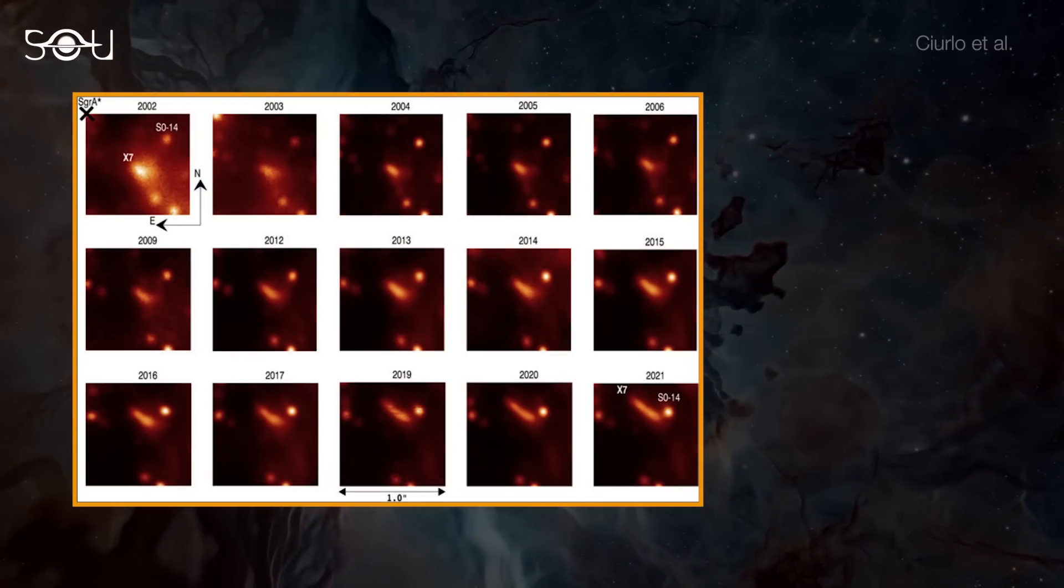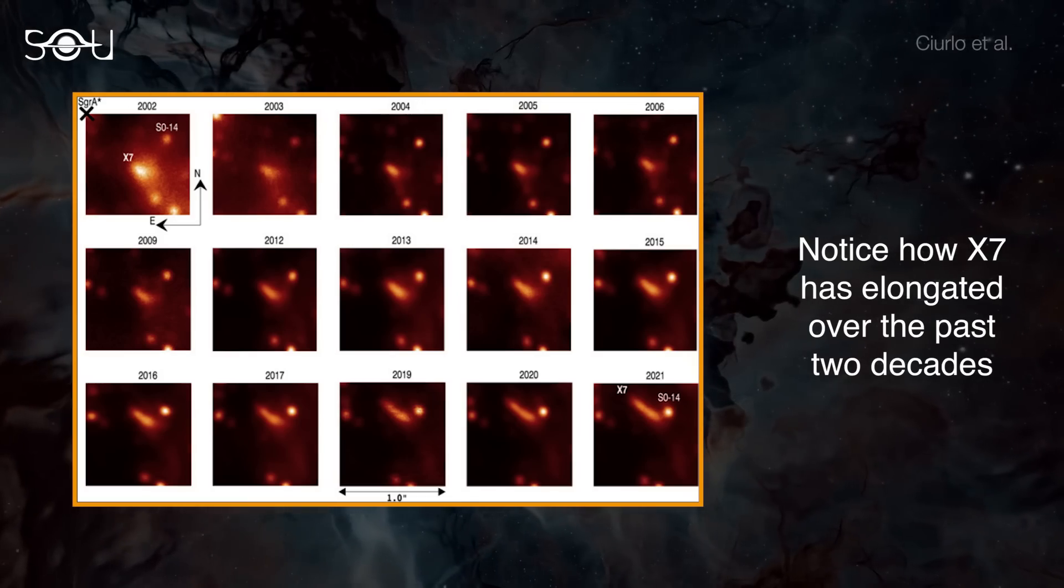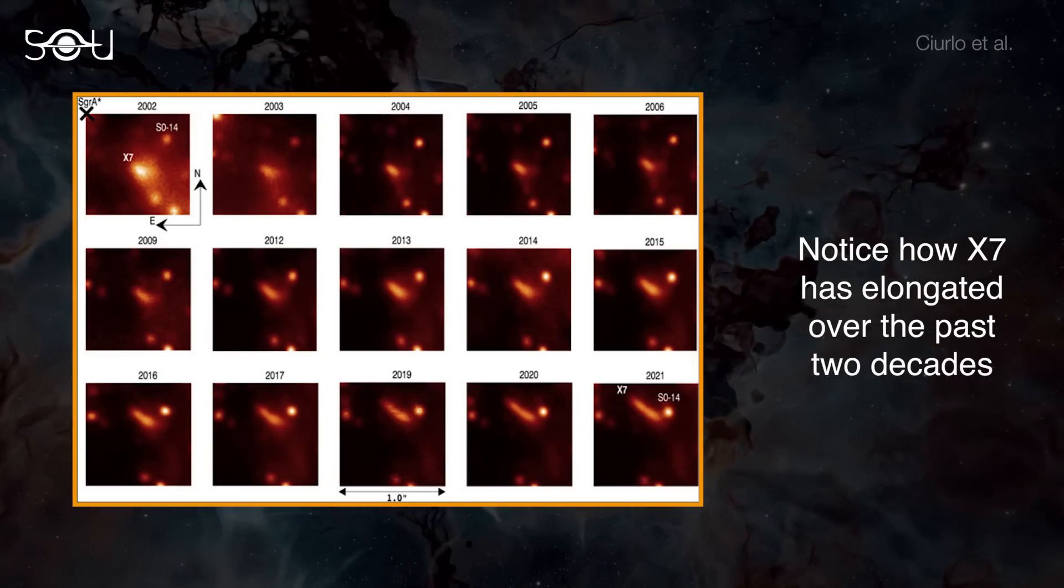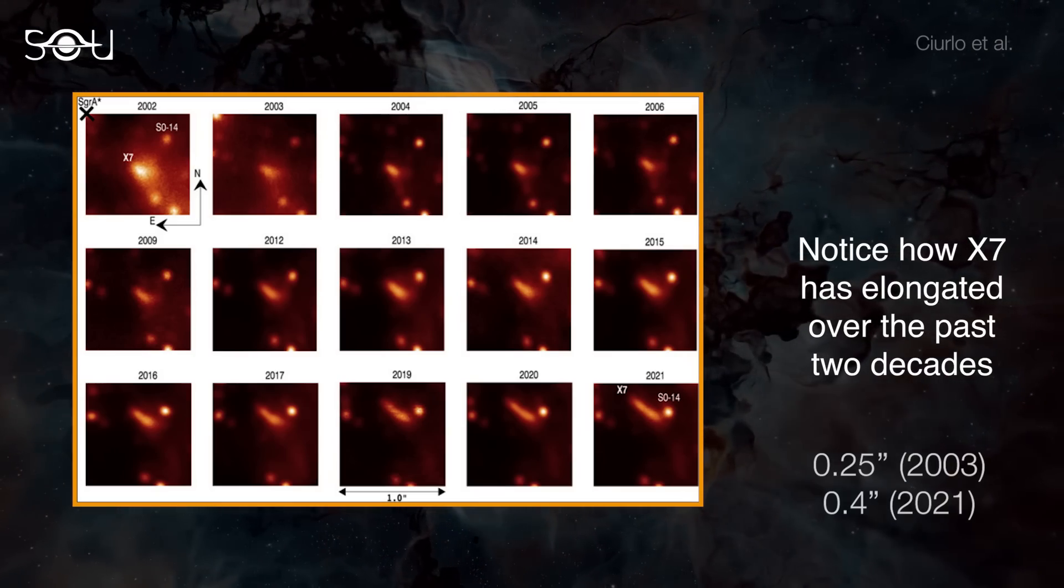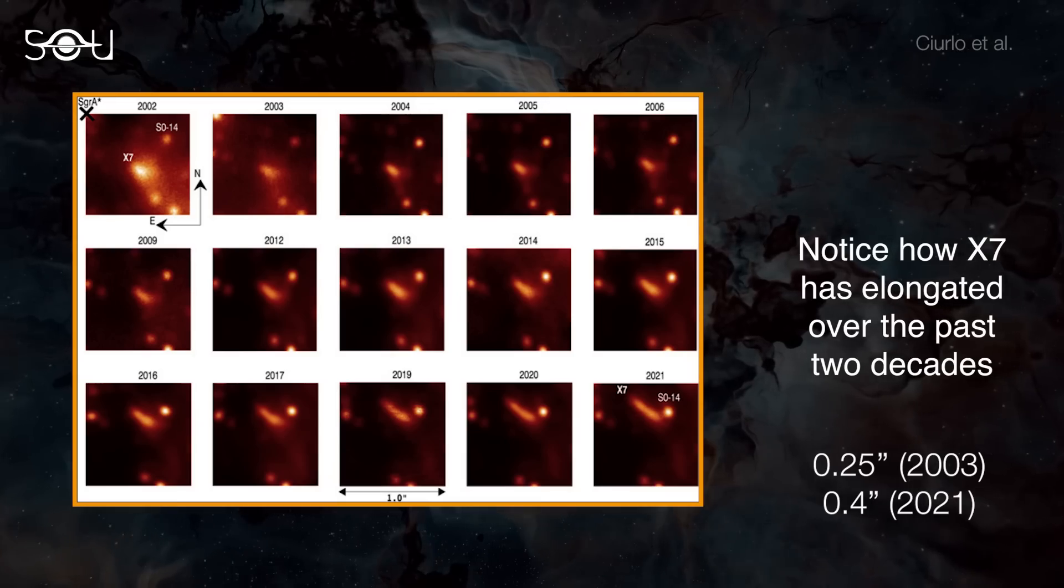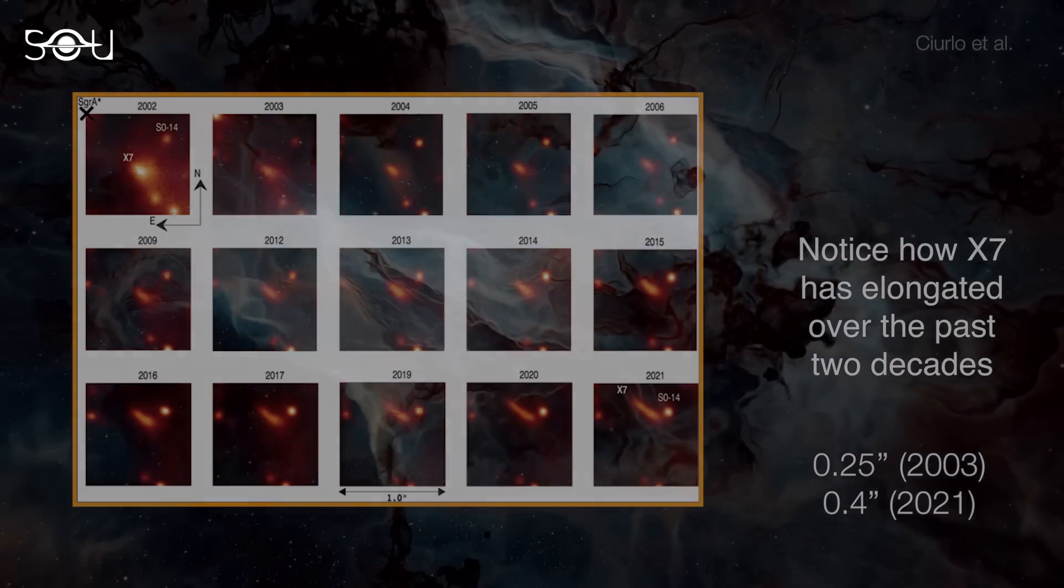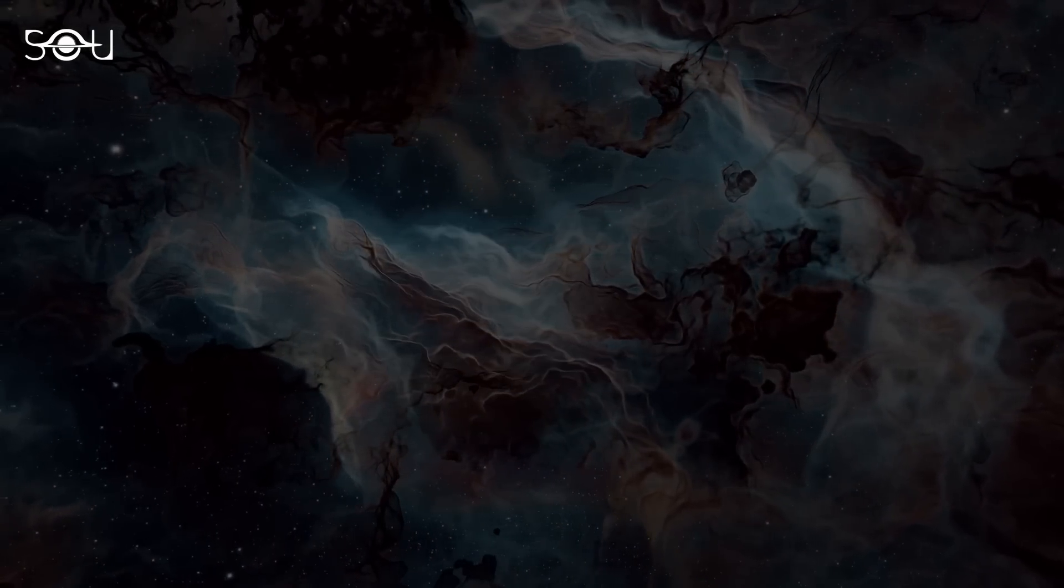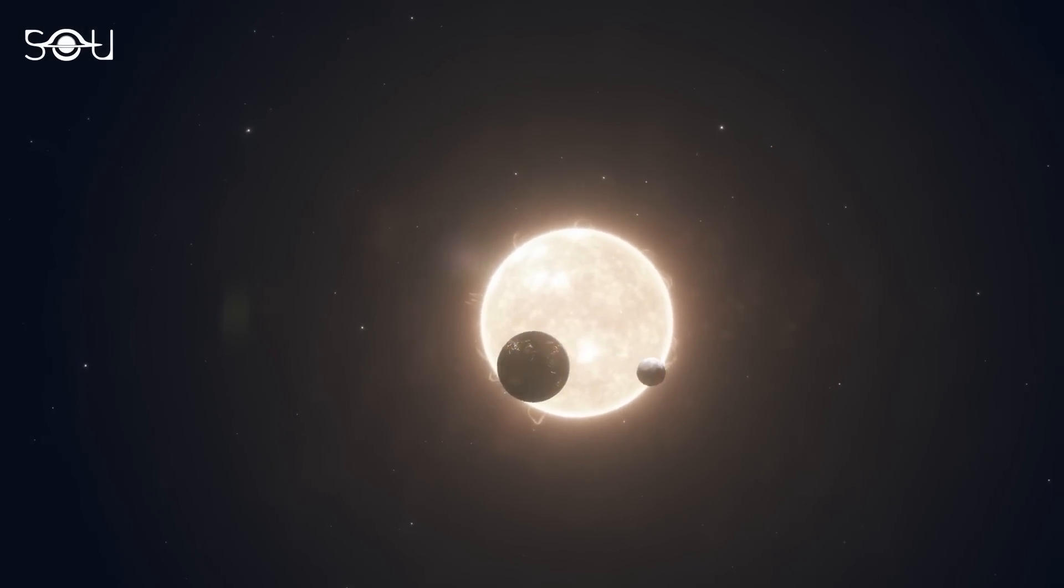Researchers have witnessed significant changes in X7's shape over the last two decades. The black hole's strong gravitational pull has stretched it into an elongated shape, more than double its original size. To be precise, X7 has grown from a width of 0.25 arcseconds in 2003 to over 0.4 arcseconds in 2021, corresponding to a spread of around 3,300 astronomical units. That's 3,300 times the average distance between the Earth and the Sun.